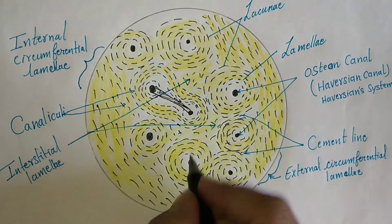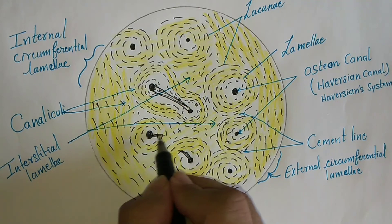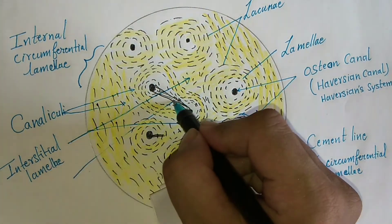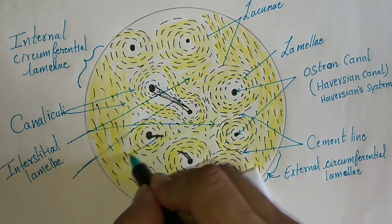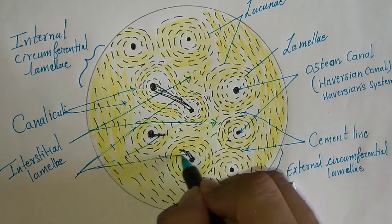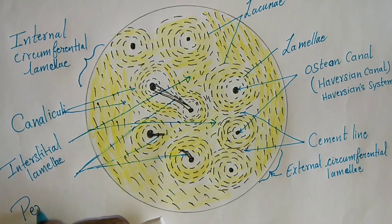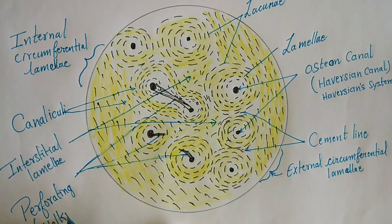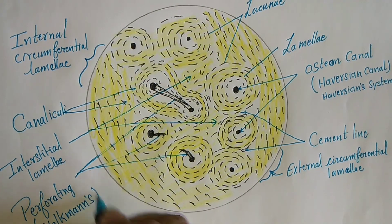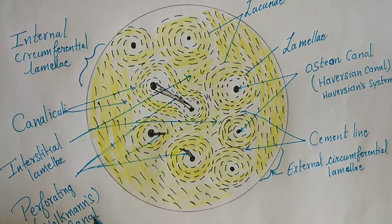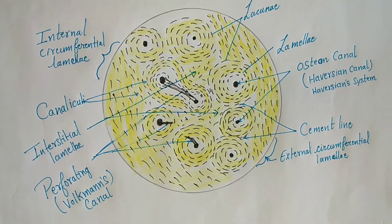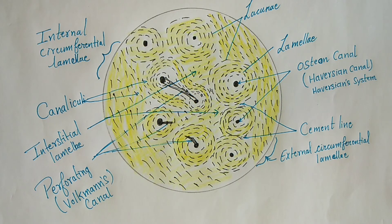This structure is called the Volkmann canal or perforating canal. Anastomoses between the central canals are called perforating or Volkmann canals.